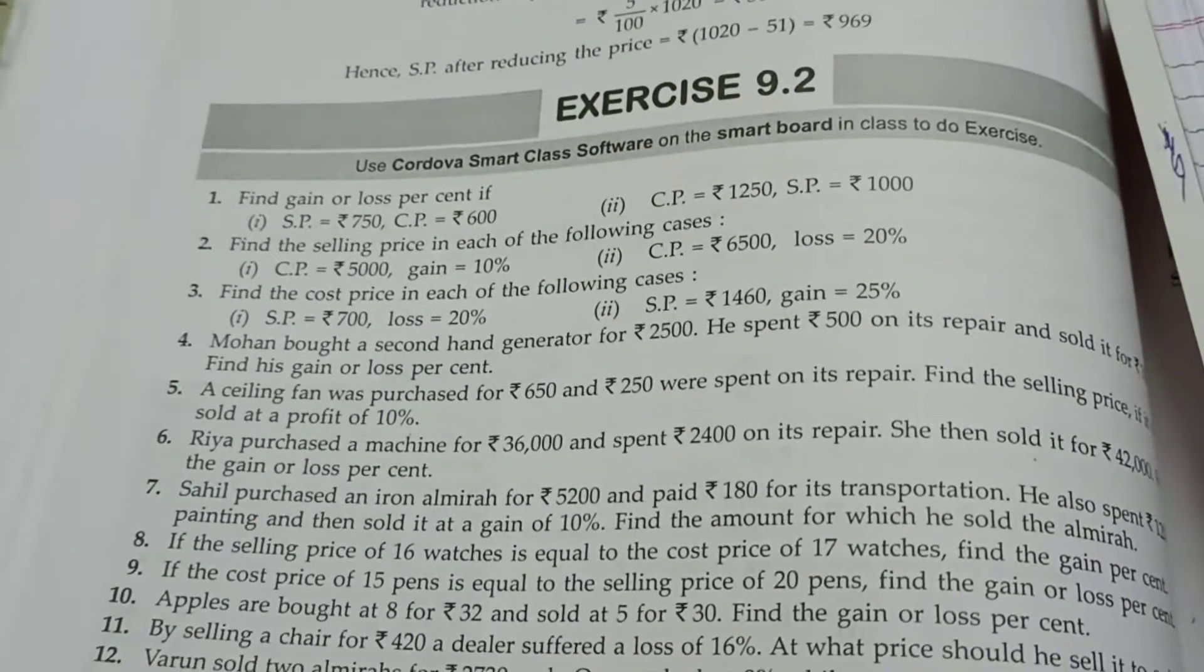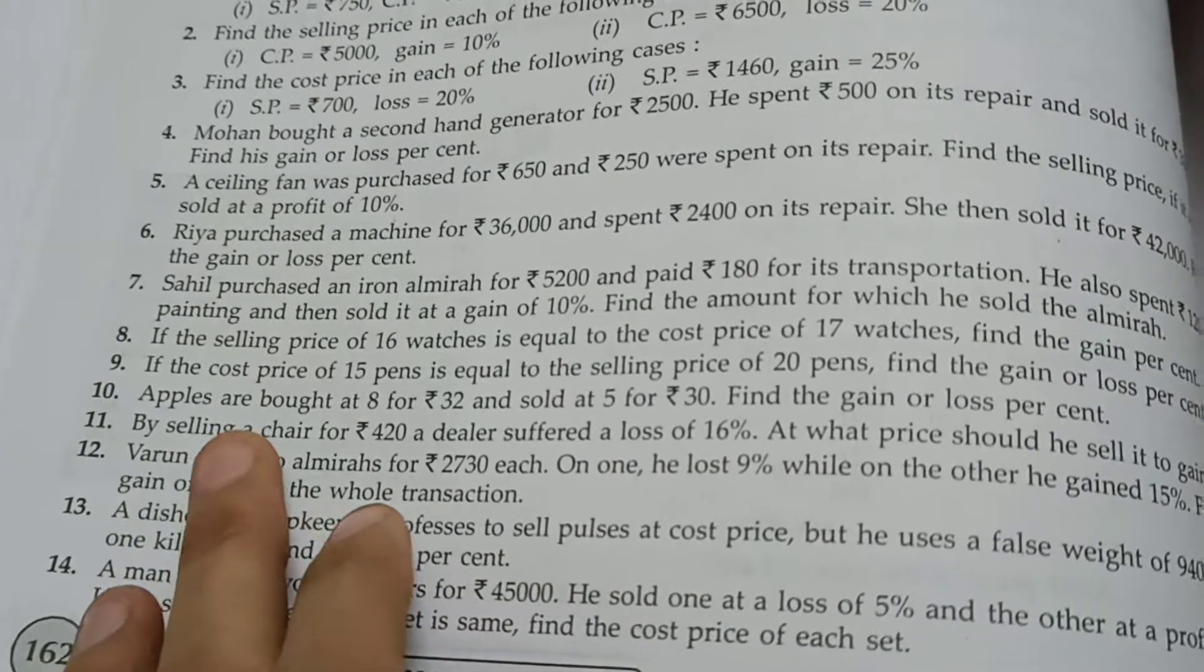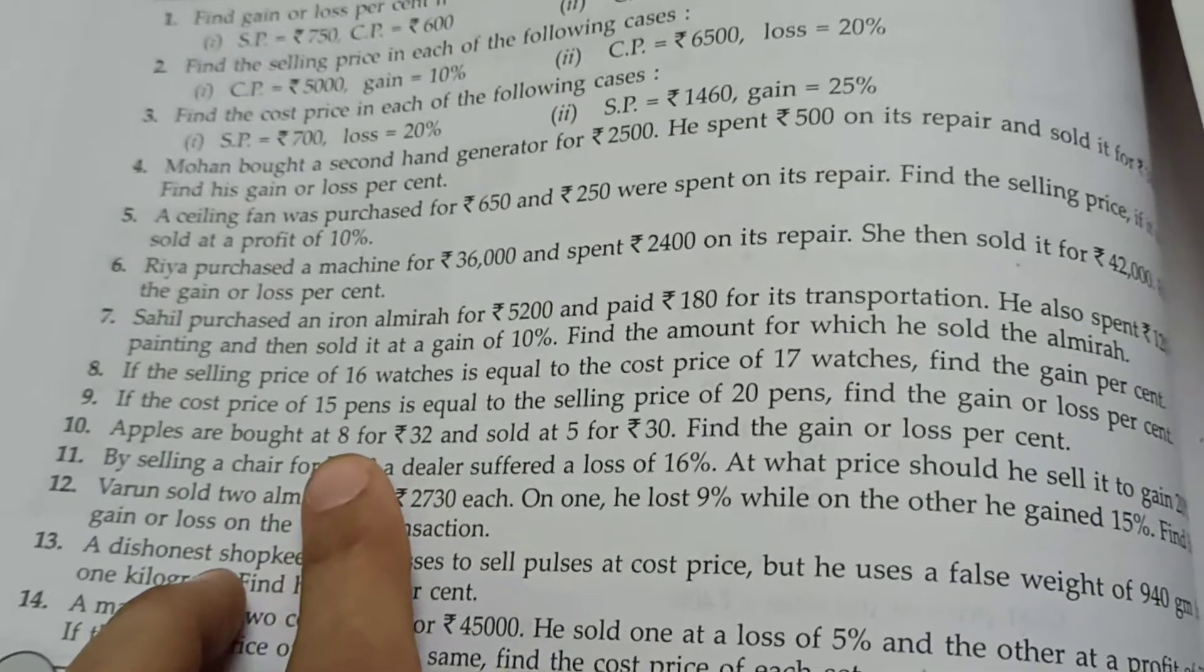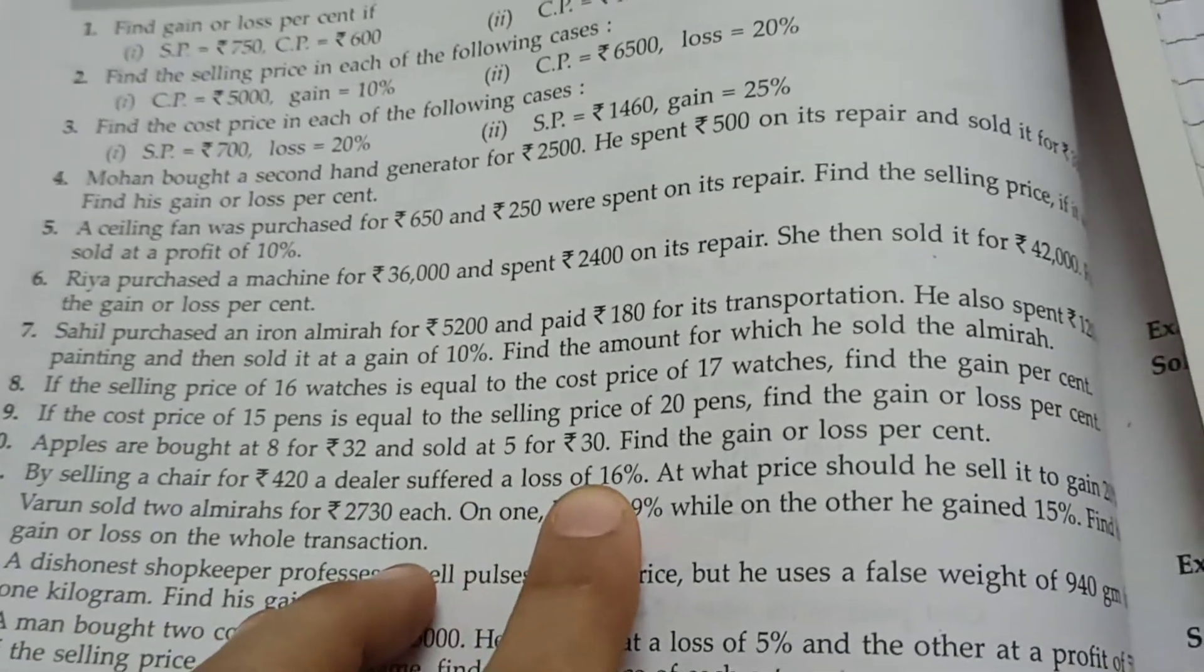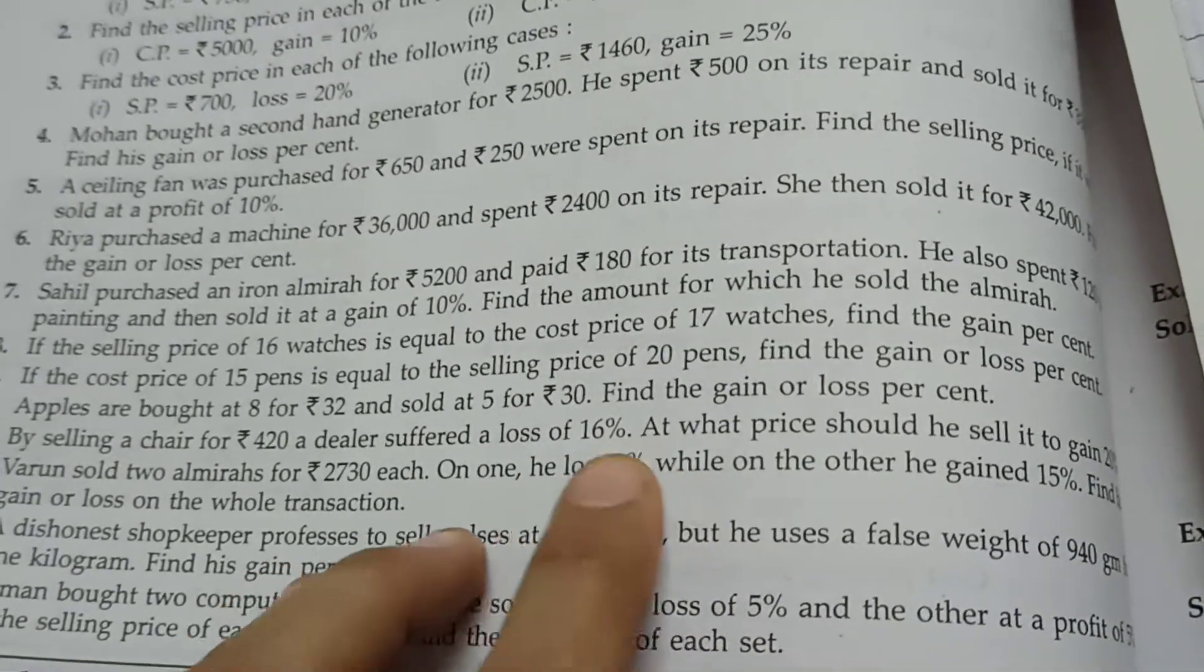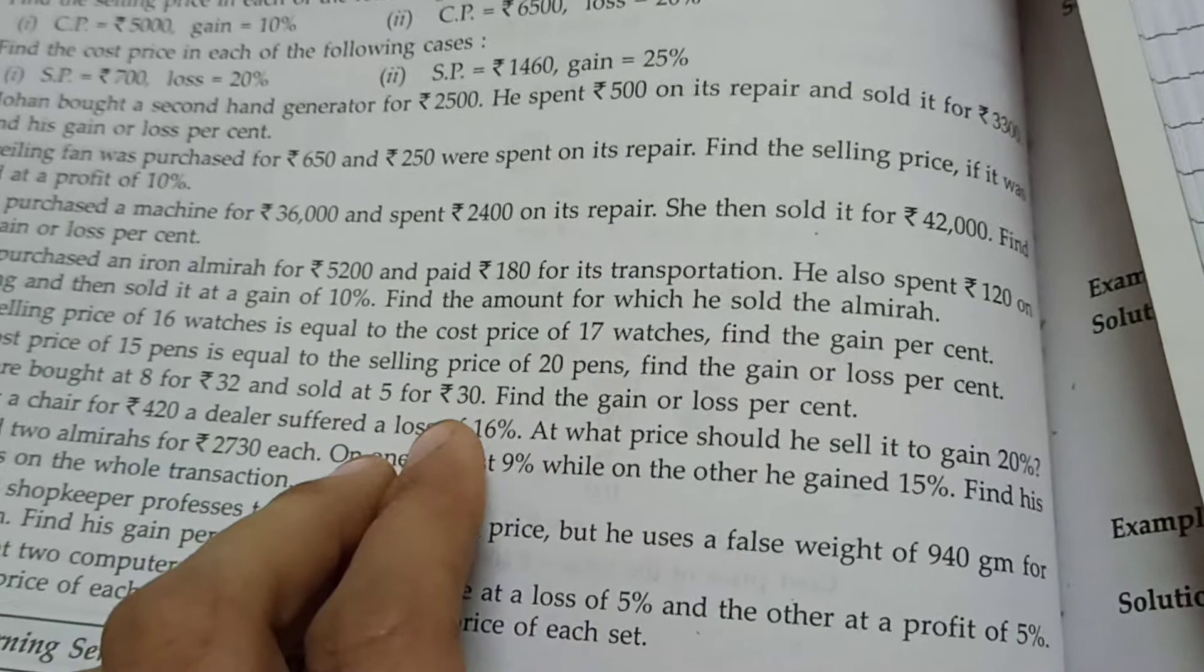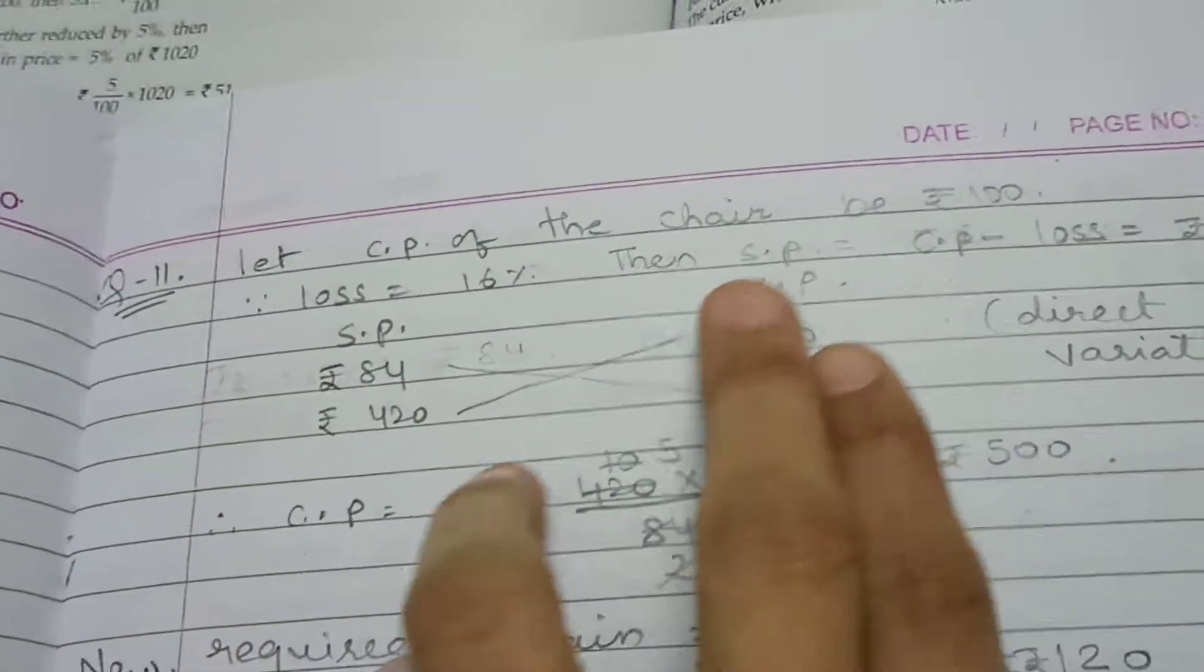Good morning students, today we are going to continue with exercise 9.2, question number 11. By selling a chair for Rs. 420, a dealer suffered a loss of 16%. At what price should he sell it to gain 20%? So, what do we need to find first? We need to find CP, right? The cost price of chair.